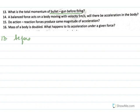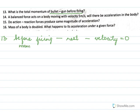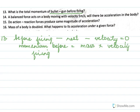What is the total momentum of a bullet and a gun before firing? Before firing, they are at rest, and because they are at rest, the velocity of both is equal to zero. So the momentum before firing will be mass into velocity, and since velocity is zero, it will be 0 kg meter per second.